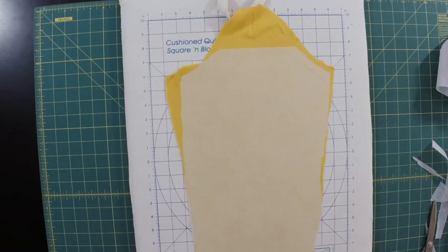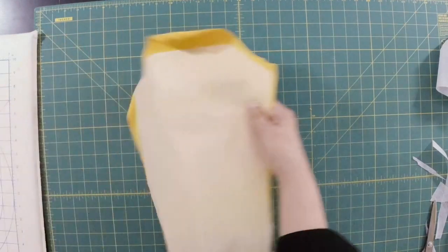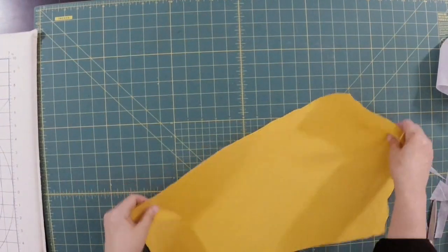You just want to make sure it's completely fused to the back of the fabric. So there you go. That is completely fused. You can move this out of the way. And now, if you look at the front, look how nice and smooth that is.